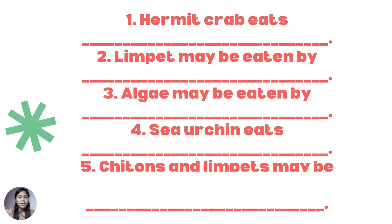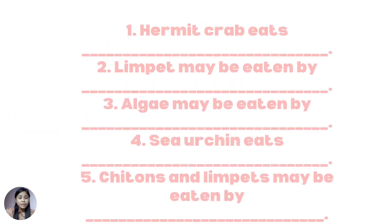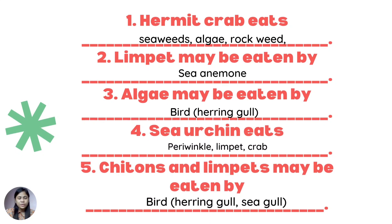These are the answers. For number one: seaweeds, algae, rock, and whelk. Number two: sea anemone. Three: bird or herring gull. Number four: periwinkle, kelp, and crab. And number five: bird, herring gull, or seagull.